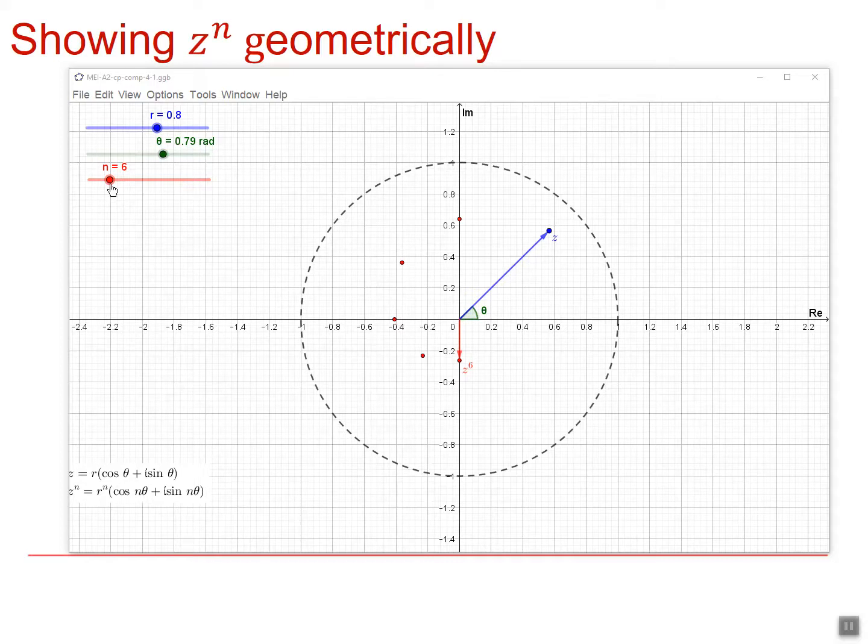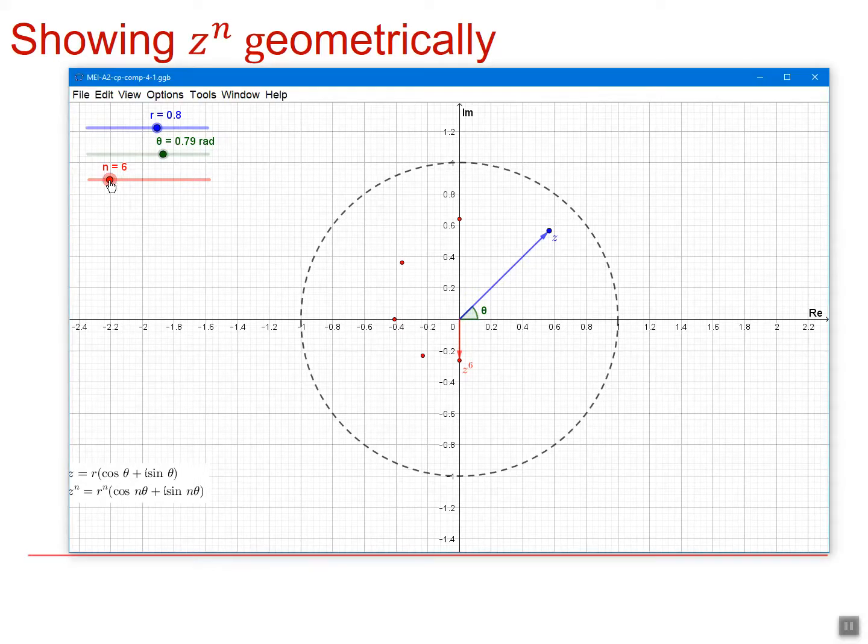I'm going up to a maximum power of 6. Watch what happens as we increase that maximum power: 7, 8, 9, and you'll see that it continues to go round, spiraling in towards the centre.